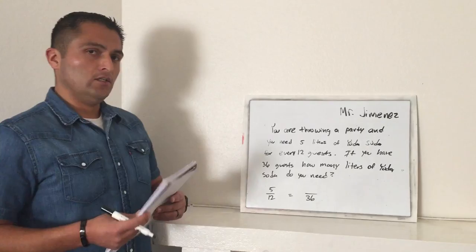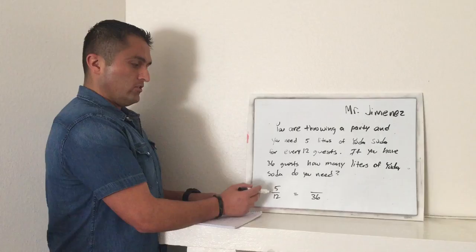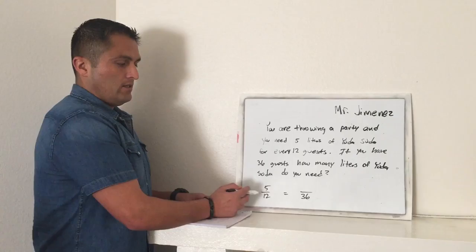So basically, my initial problem tells me I need 5 liters per 12 guests. This is the ratio that is given. Now they're asking, I need liters for 36 guests.